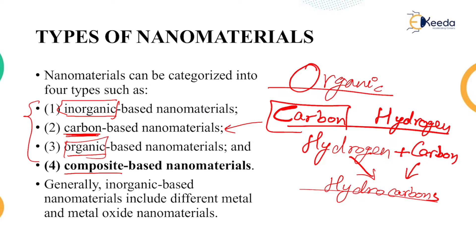Generally, inorganic-based nanomaterials include different metals and metal oxides. Metals and metal oxides do not contain carbon at all. Metals can be anything — for example, ferrum which is iron, Ag which is argentum (silver), and other metals and their metal oxides.